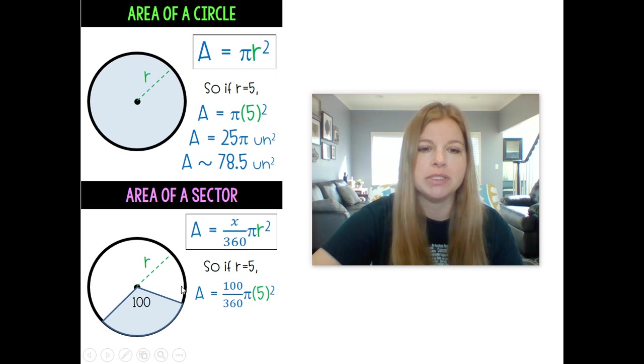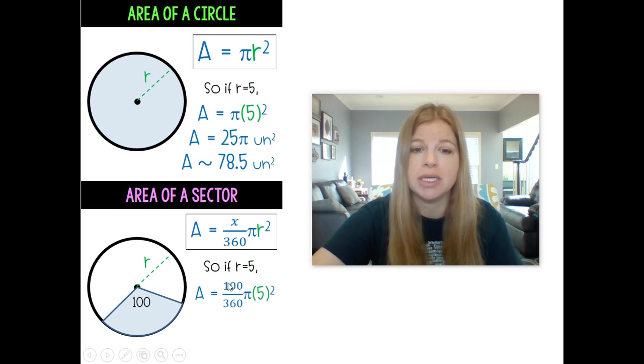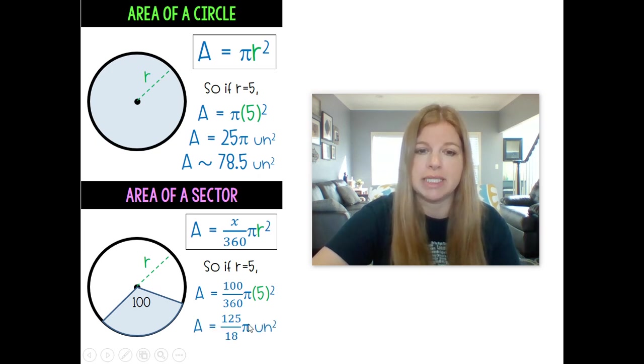So if I was to take 5 for my radius, if that's what I'm given, and then I only want to know the area of this sector that's got 100 degrees in it, it would be 100 over 360 times pi 5 squared. Now you can go ahead: 5 squared is 25, 25 times 100 is 2500. I simplified 2500 over 360 to get 125 over 18.